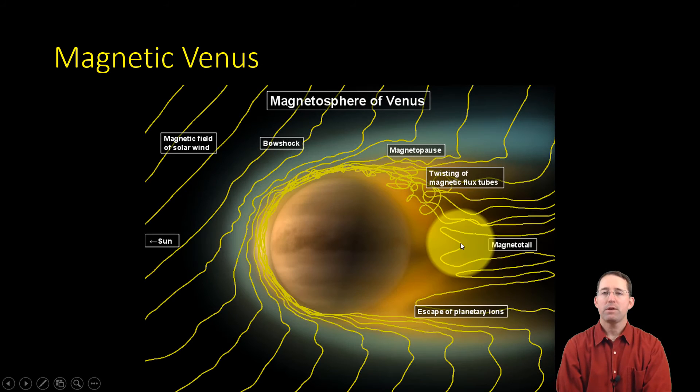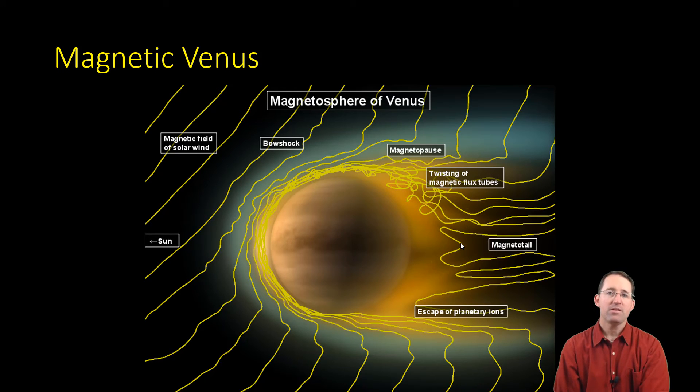We're going to look at the magnetic fields of Venus and Mars together because they are very similar. Venus does not have a true magnetic field. It does have something, but it's not generated by the interior of the planet. Venus has a very thick atmosphere. In that very outermost layer of the atmosphere, known as the ionosphere, there are ions hanging out, and the solar wind interacts with these and generates some very wimpy form of a magnetic field. You can see it's very convoluted, and there's not nearly the structure that we saw in the magnetic fields of either Mercury or Earth.